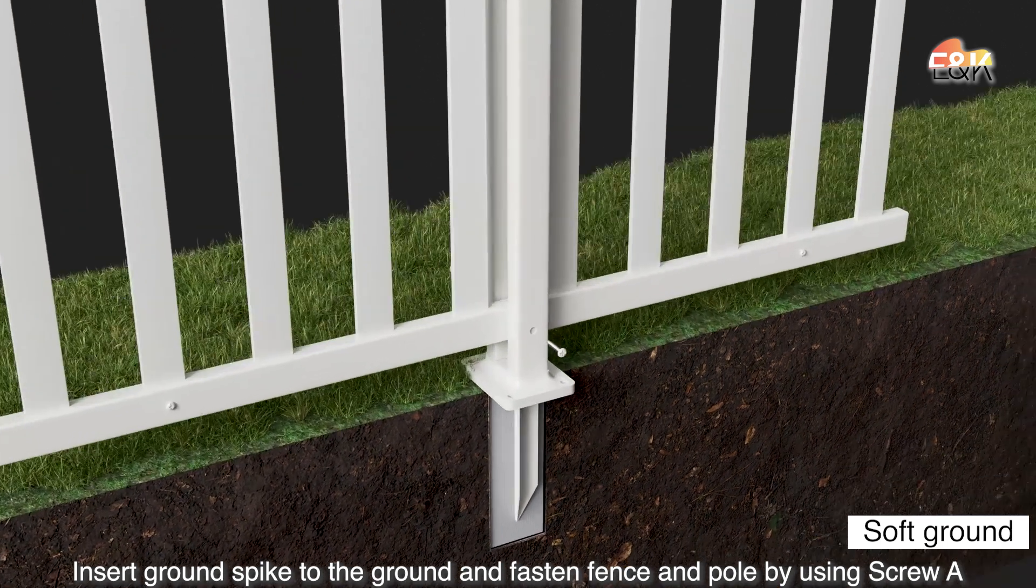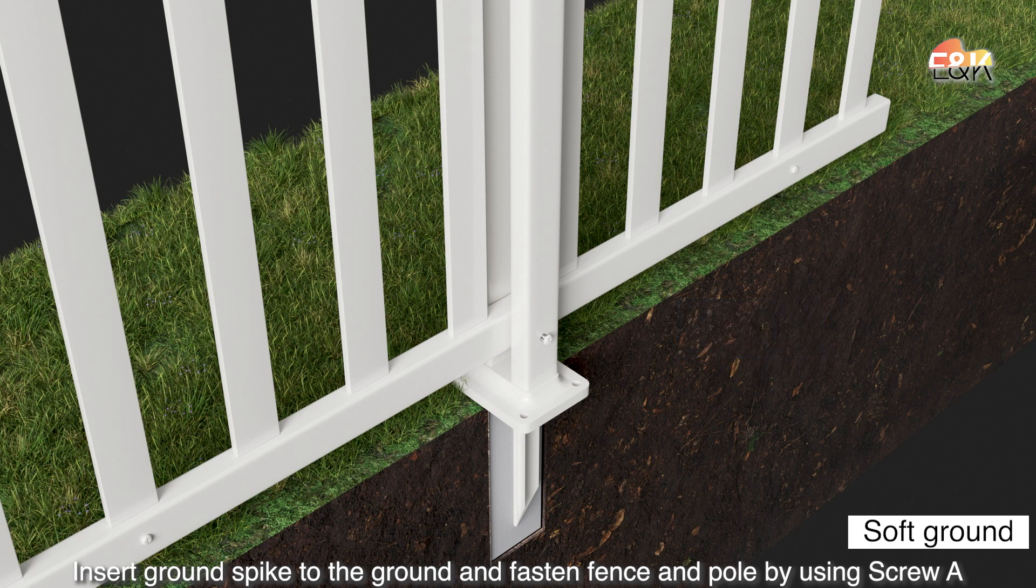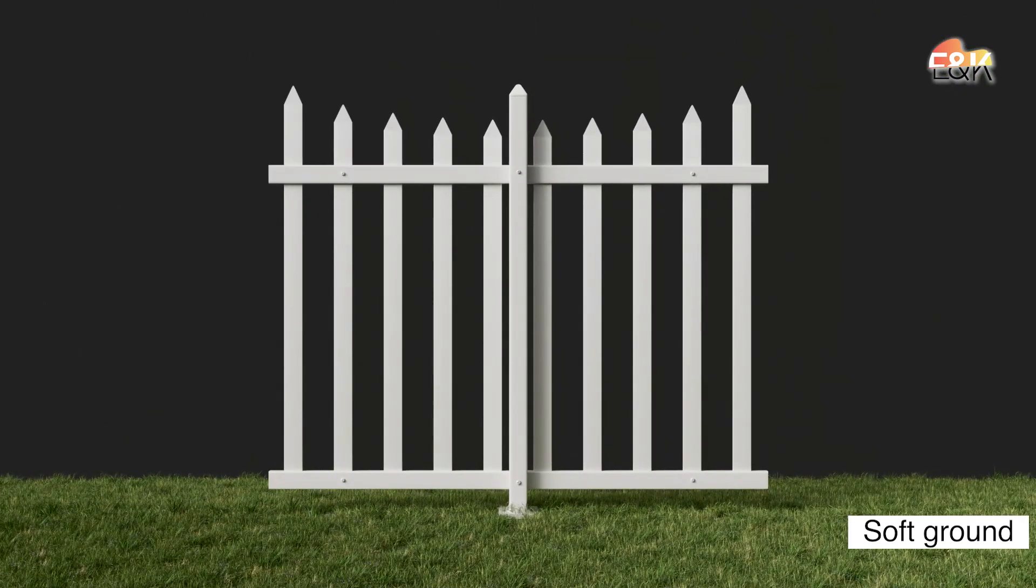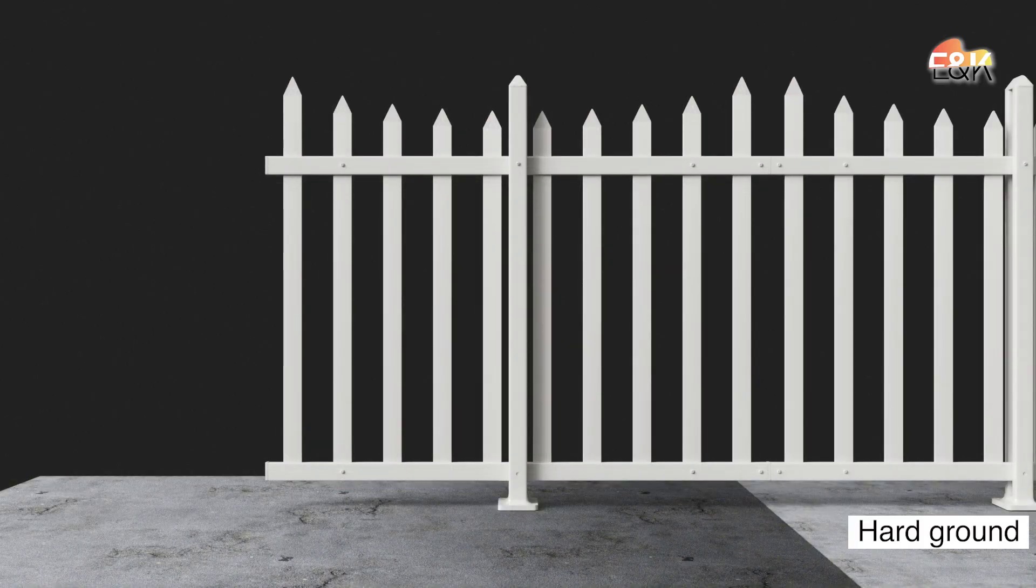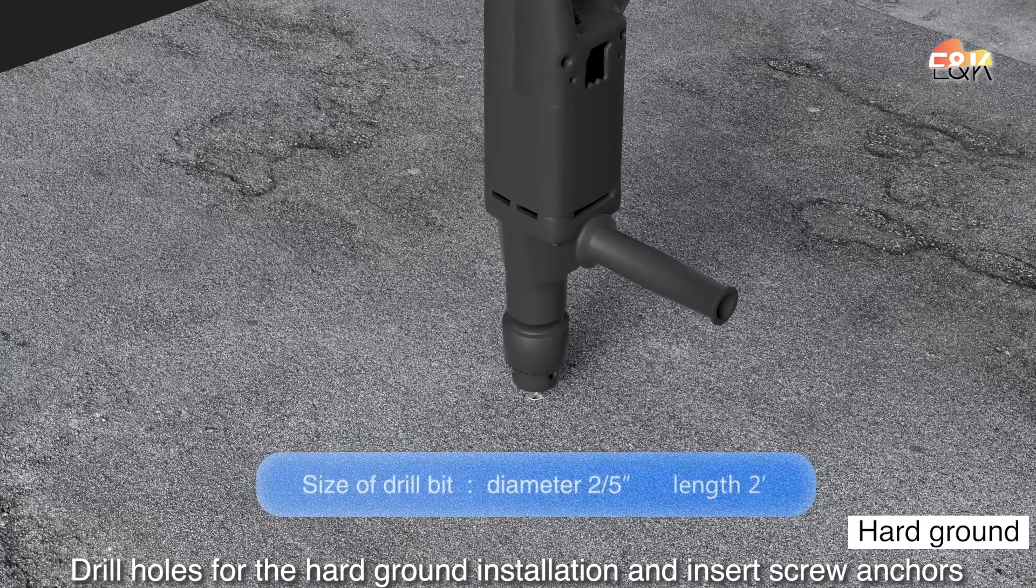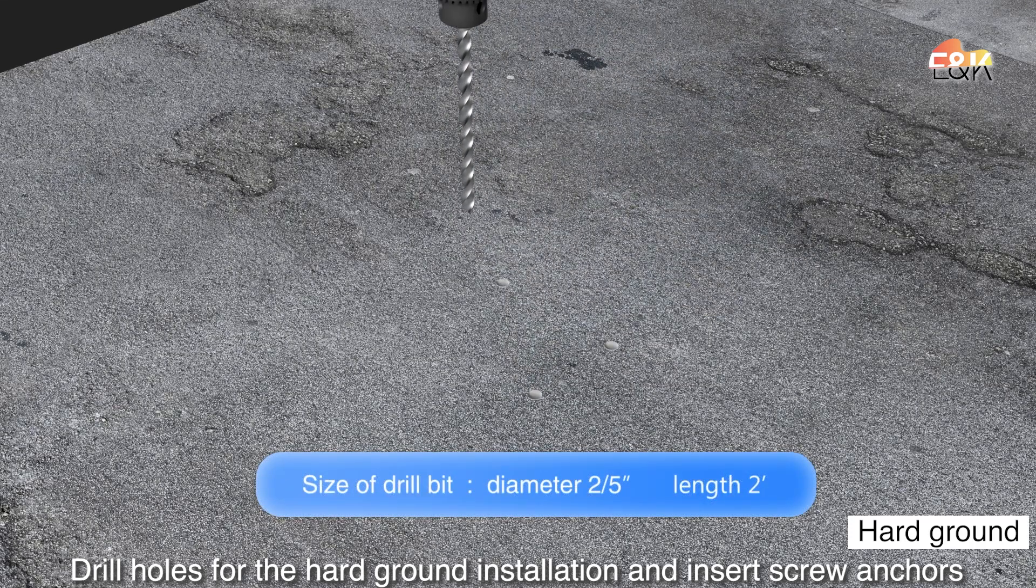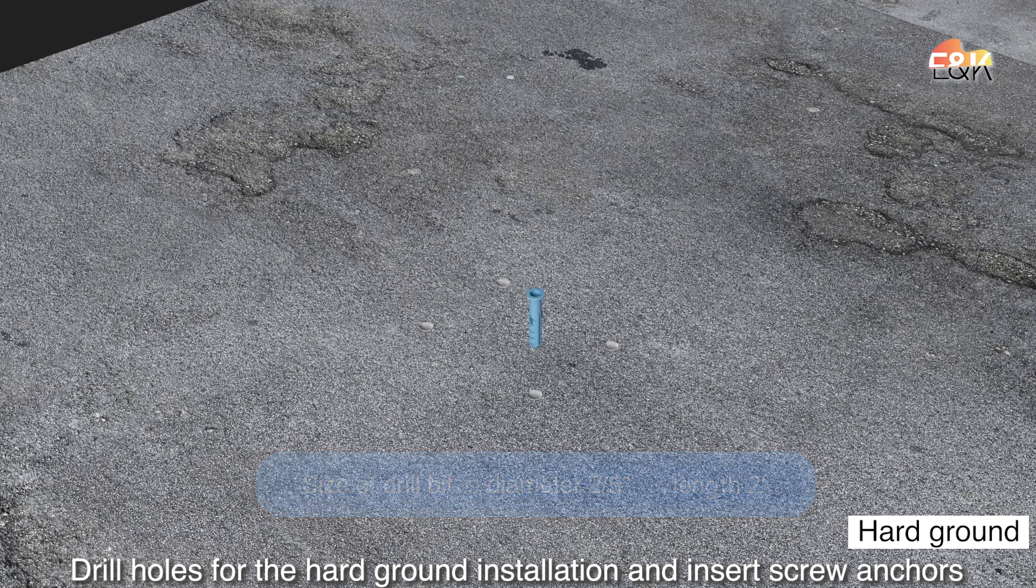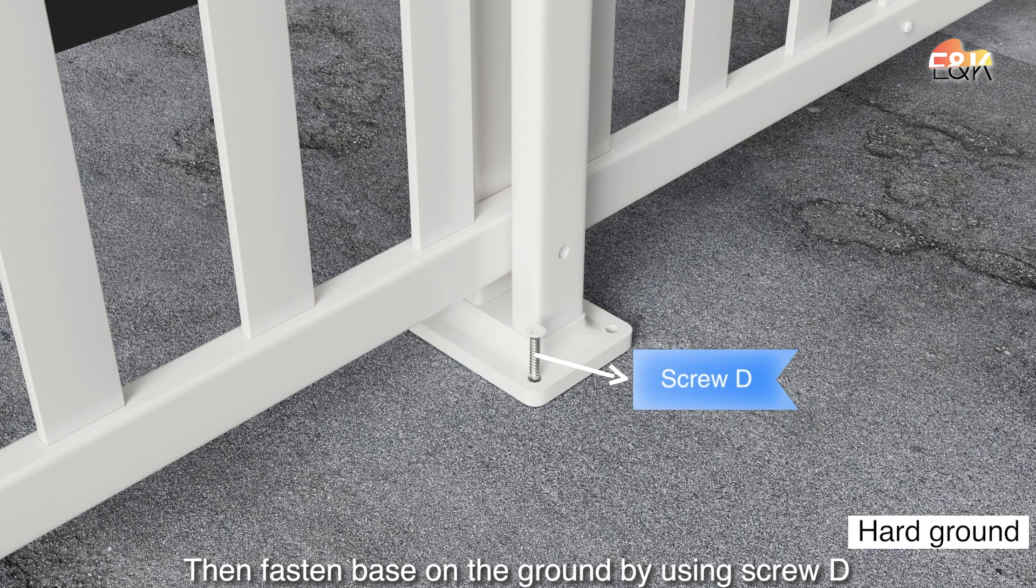Insert ground spike under the ground and fasten fence. Then fasten base on the ground by using screw bead.